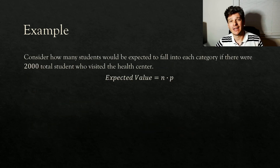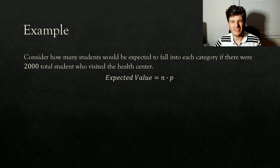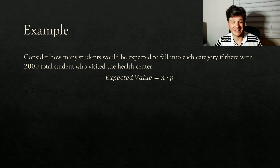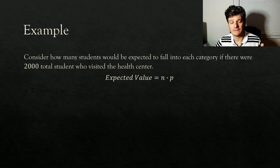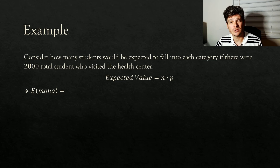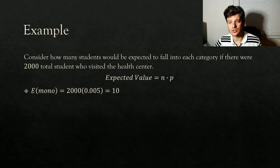Let's break this down in terms of expected value, because it's much easier to understand what's going on if we have actual numbers to look at. We want to consider how many students we would expect to fall into each category if 2,000 total students visited the health center. Expected value is the sample size times the probability. So the number of students we expect to have mono is 2,000 × 0.005 = 10. We would expect 10 out of those 2,000 students to have mono.